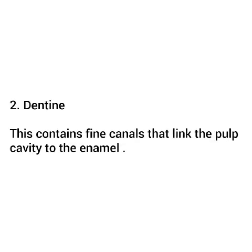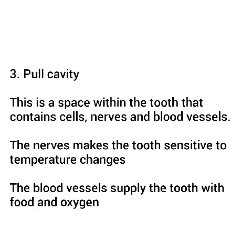Dentine contains fine canals that link the pulp cavity to the enamel, so these are connected. The pulp cavity itself is a space within the tooth that contains cells, nerves, and blood vessels. The nerves make the tooth sensitive to temperature changes, while the blood vessels supply the tooth with food and oxygen.